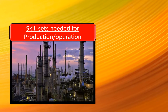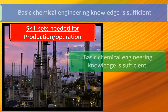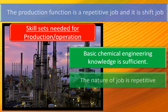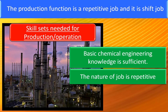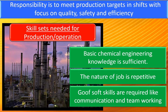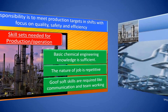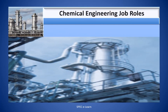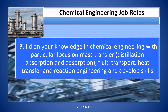Skillsets required for production and operation functions. Basic chemical engineering knowledge is sufficient. The production function is a repetitive shift job, and the responsibility is to meet production targets with a focus on quality, safety, and efficiency. Build your knowledge in chemical engineering with particular focus on mass transfer, distillation, absorption and adsorption, fluid transport, heat transfer, and reaction engineering.